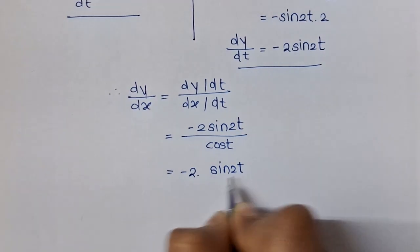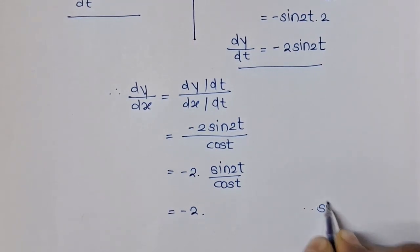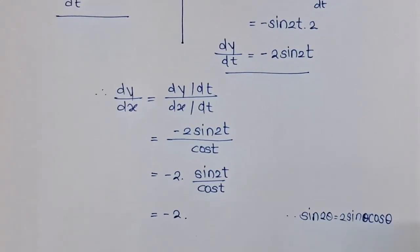Sin 2t can be expanded using the identity sin 2θ = 2 sin θ cos θ. So similarly we will use this identity here and we will have 2 sin t cos t, giving us minus 2 times 2 sin t cos t over cos t.